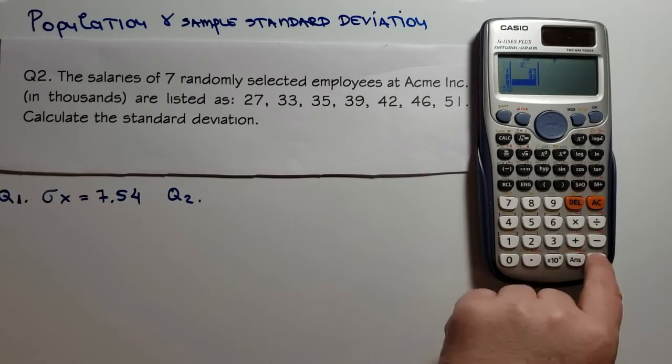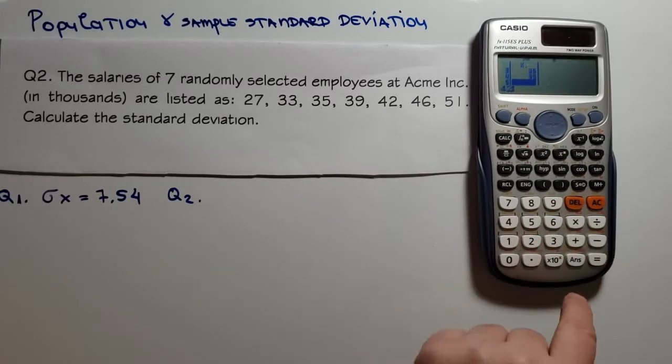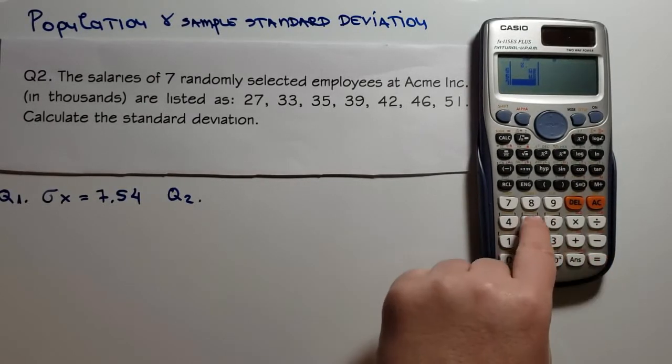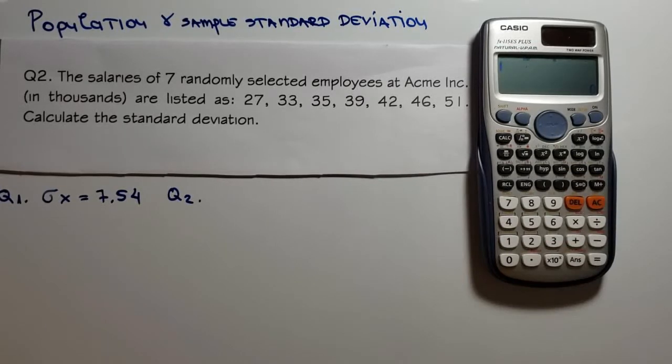35 equal, 39 equal, 42 equal, 46, and 51 equal. I'll press all clear button in order for the calculator to save the values.